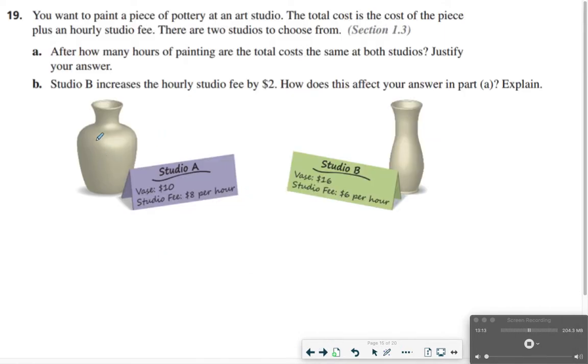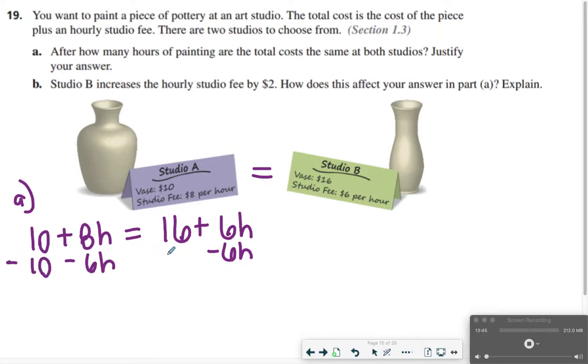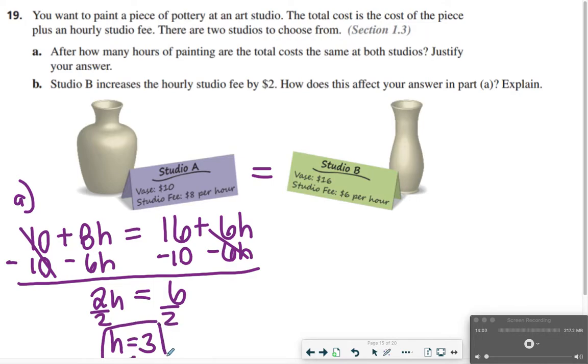The last one is number 19. After how many hours of painting are the total costs the same? So what you have to do is just basically set up Studio A's equation equal to Studio B's equation. So I'm going to do 10 for Studio A plus $8 per hour, so 8H is equal to Studio B's price of $16 for the base plus $6 per hour, 6H. This is part A. I'm going to subtract 6H to get it over here on the left side, and then I'll need to move this 10 over on the right side, so minus 10. So 16 minus 10 is 6. 8H minus 6H is 2H. Divide both sides by 2. So after 3 hours, you're paying the same price.